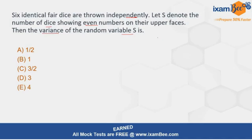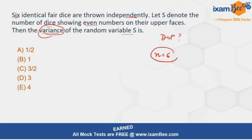You have to find what exactly is the variance of this distribution. Firstly, you will need to see what kind of probability distribution this is — then only you can apply the formula for variance. Different probability distributions have different formulas. We know six identical fair dice are thrown, so n = 6. They are thrown independently — this word is also important here.